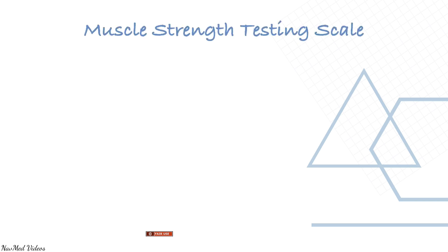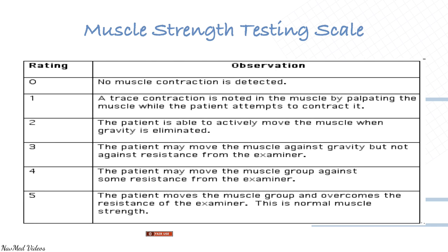Perform range of motion — passive and active — and muscle strength testing. The neurovascular exam covers color, temperature, pulses, edema, sensation, and motor functions. The muscle strength testing scale runs from 0 to 5: grade 0 is no muscle contraction; grade 1 is a trace of contraction noted by palpating the muscle while the patient attempts to contract it.